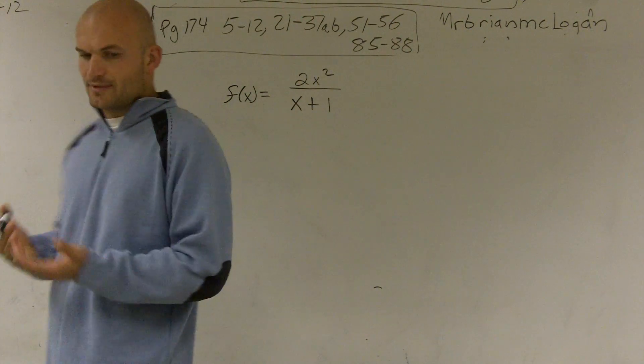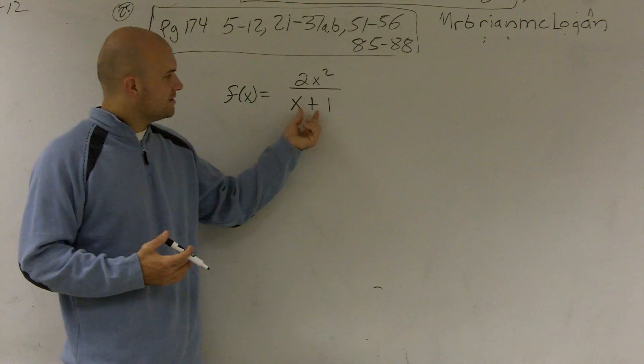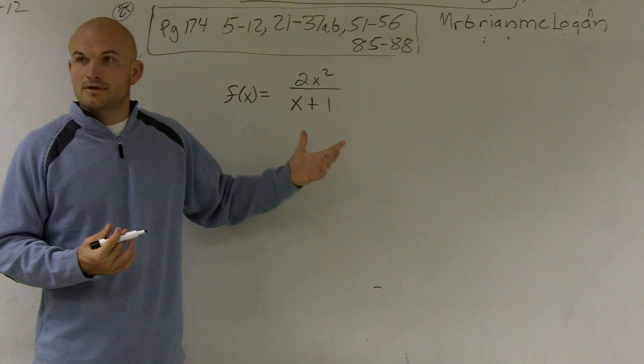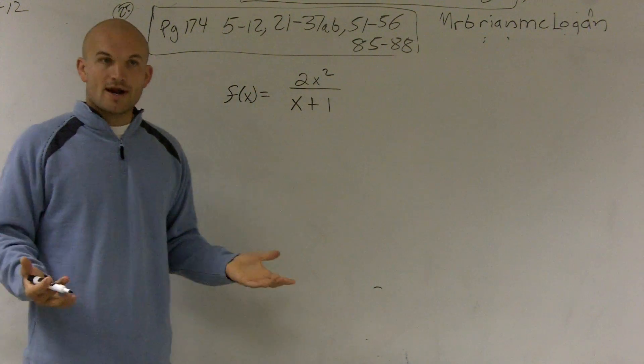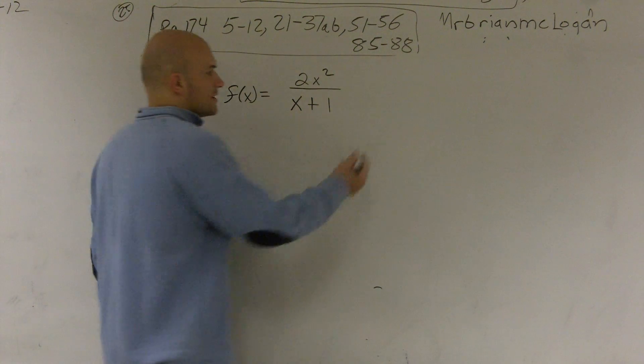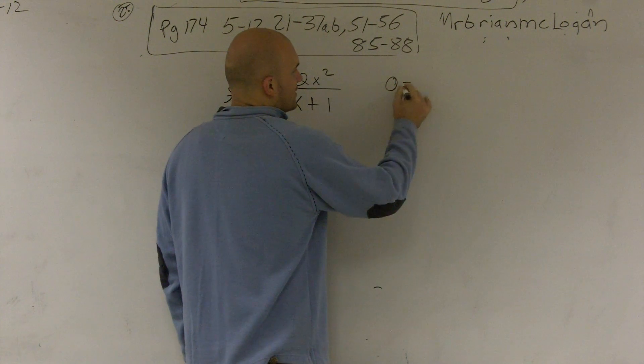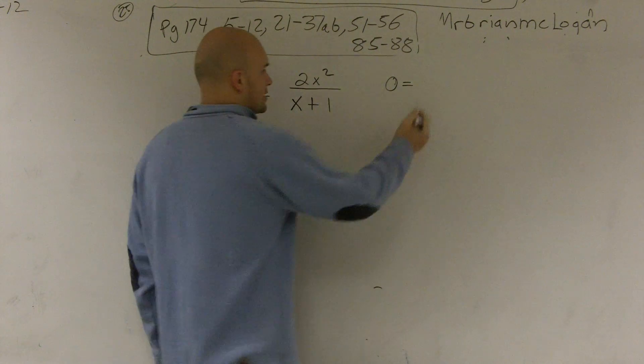And so one thing we know about a rational function is you cannot divide by 0. So whatever values are going to make our function 0 on the bottom are not going to be defined in our graph. So again, to find the domain, let's just set the bottom equal to 0.